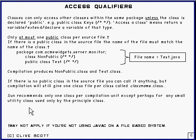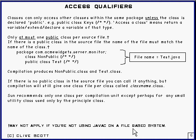Sun recommends that you only put one class per compilation unit, except perhaps if you've got a little utility class which is being used by the main class in the compilation unit and it's not used by anything else. Otherwise you just put one class per compilation unit — that's what's recommended and that's generally what people do. These restrictions don't necessarily apply if you're not using the Java compiler on a file-based system, so that's just something to be aware of.